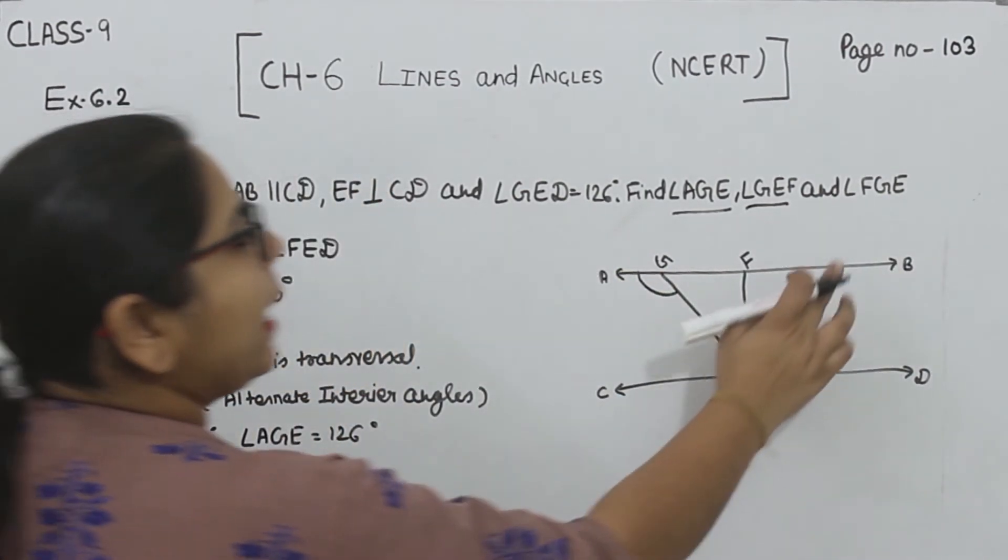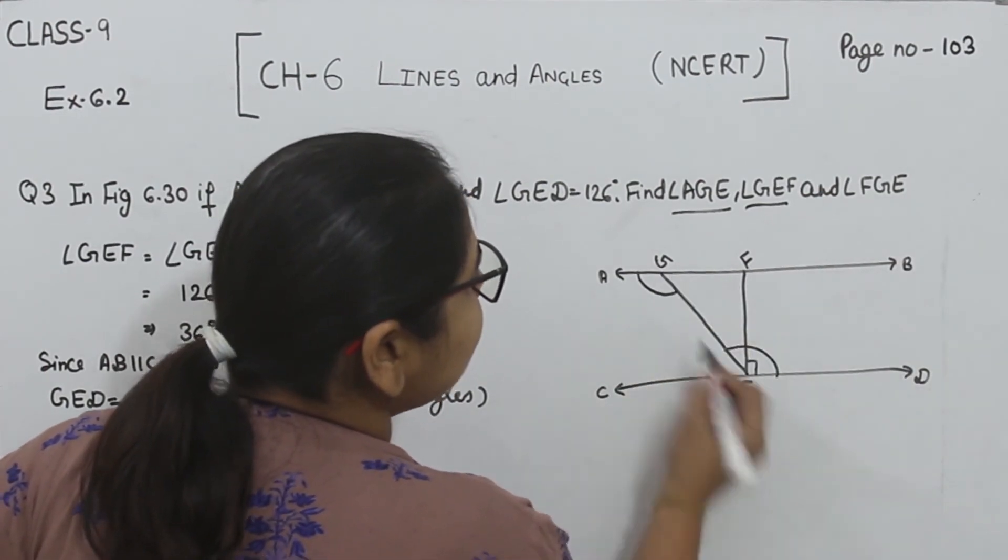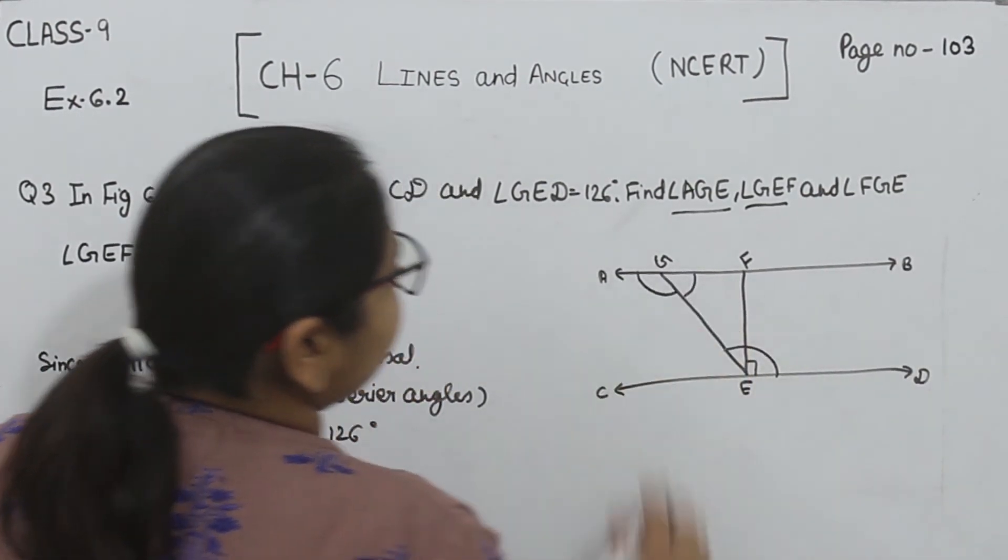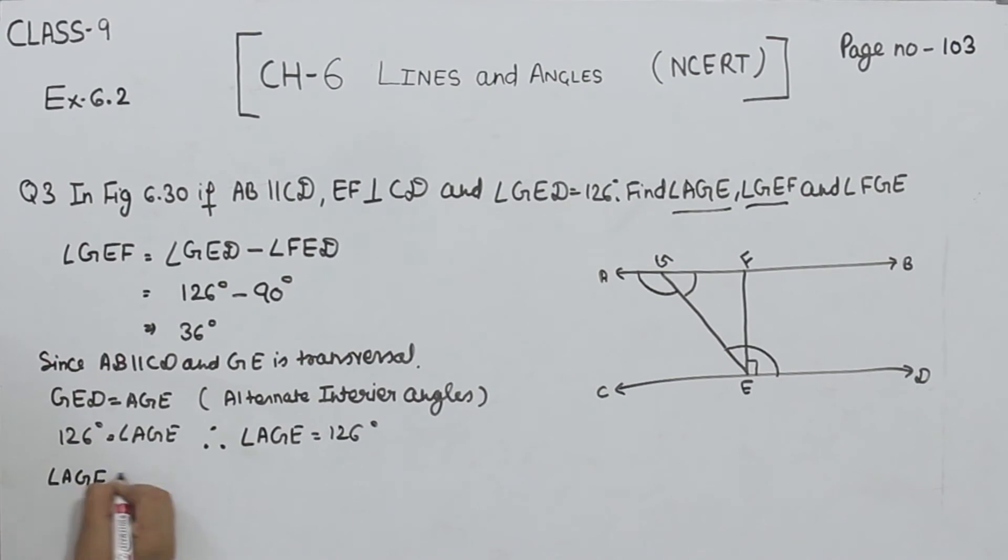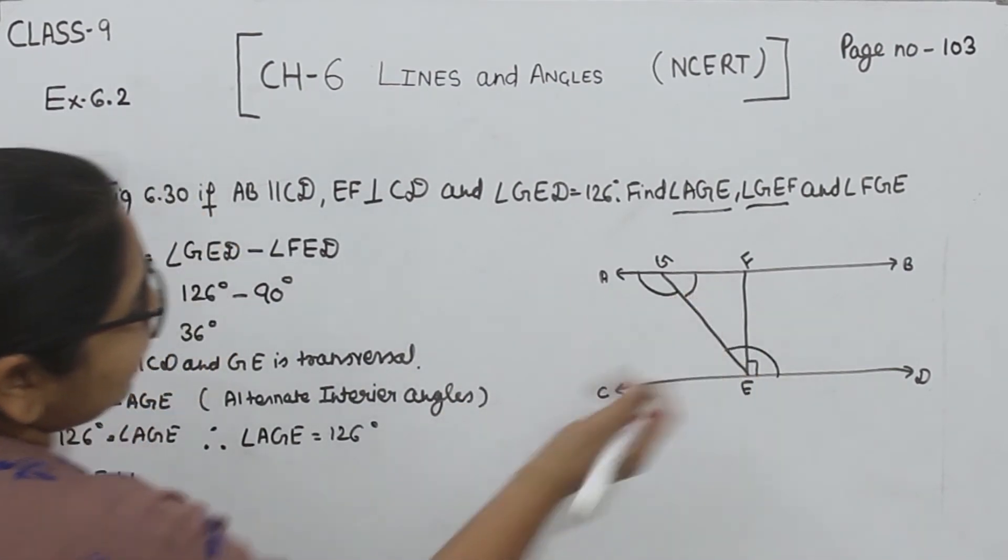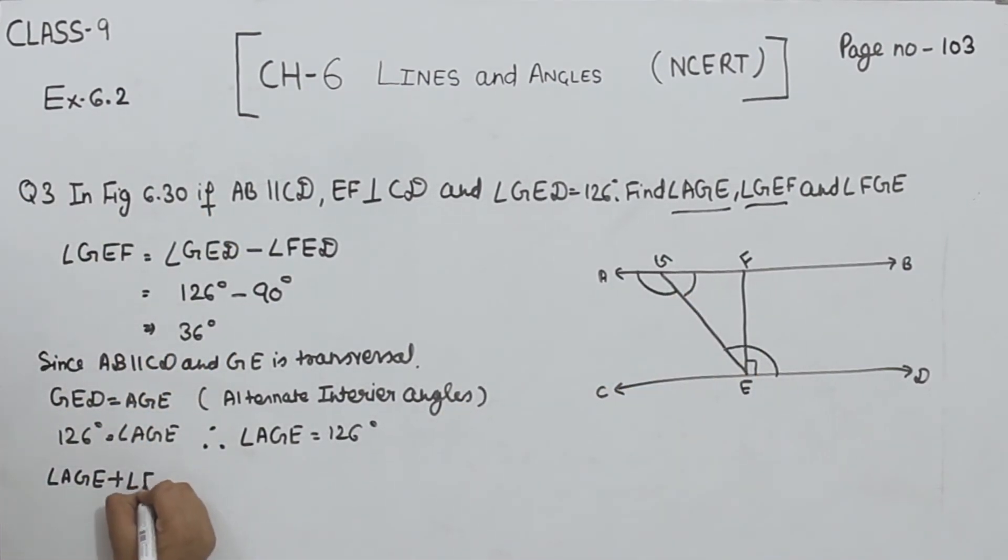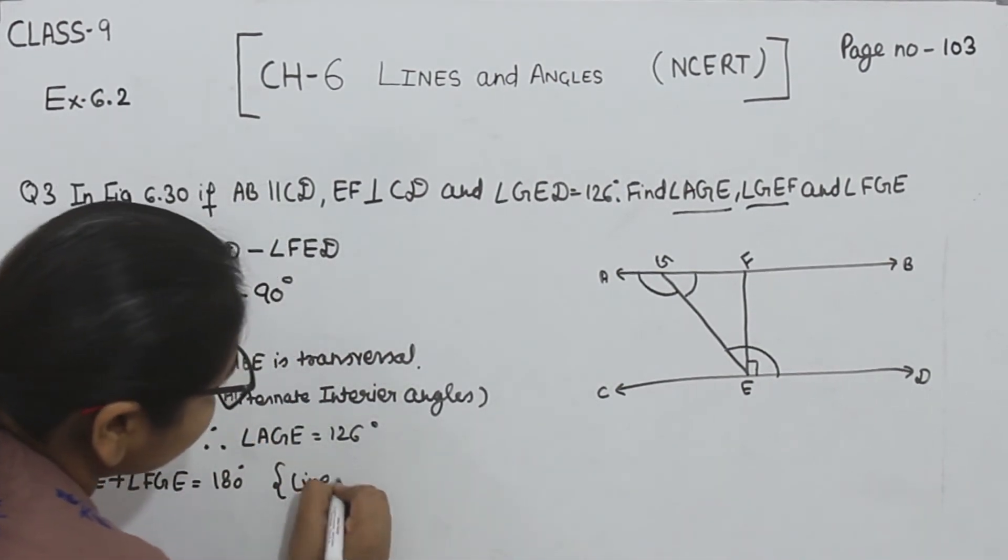Angle FGE, this angle. Now we will write: angle AGE plus angle FGE equals 180. Why? Because this is a linear pair.